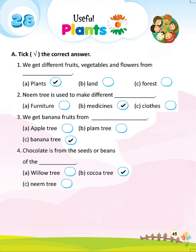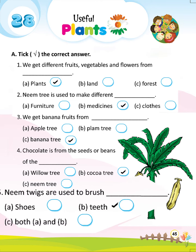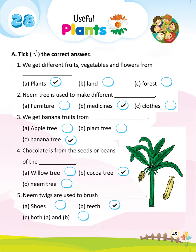Question 4: Chocolate is from the seeds or beans of the — B. Cocoa tree. Question 5: Neem twigs are used to brush — B. Teeth.